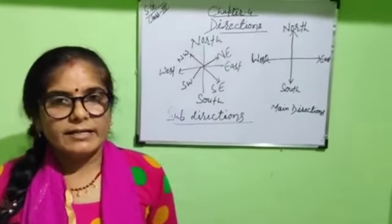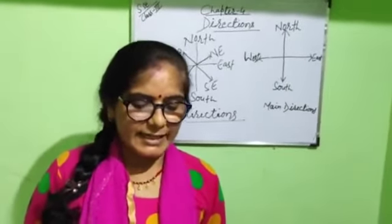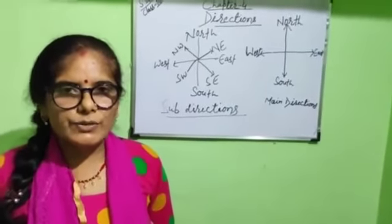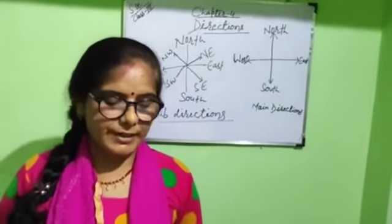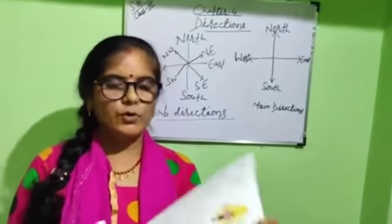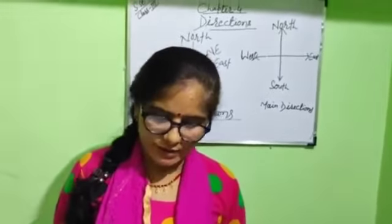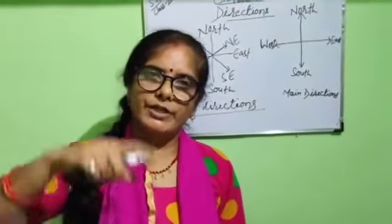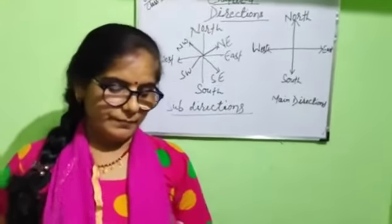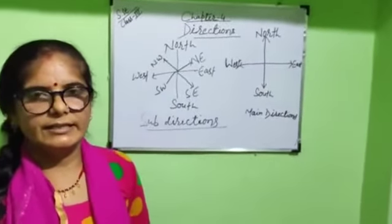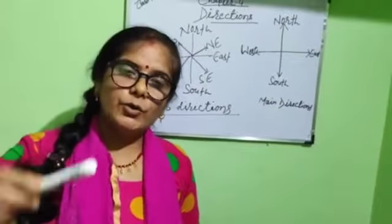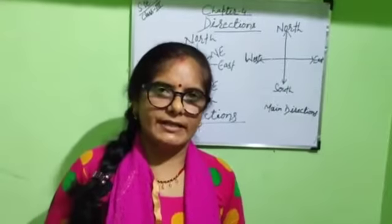Daytime mein toh hum sun se direction pata kar sakte hain, lekin cloudy day mein pata nahi chalega, toh uske liye humein compass ki zaroorat padegi. Look at this instrument, children — this is a compass. You can see that there is a needle which always points to the north. Iska needle hamesha north direction mein rehta hai. If we know one direction, we can find out the others easily.